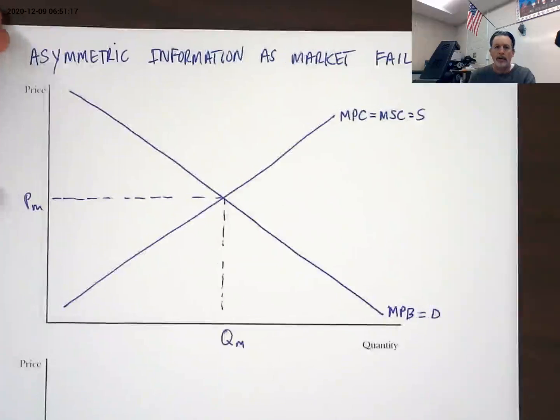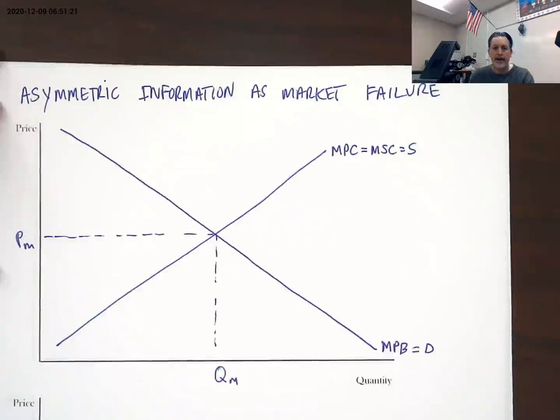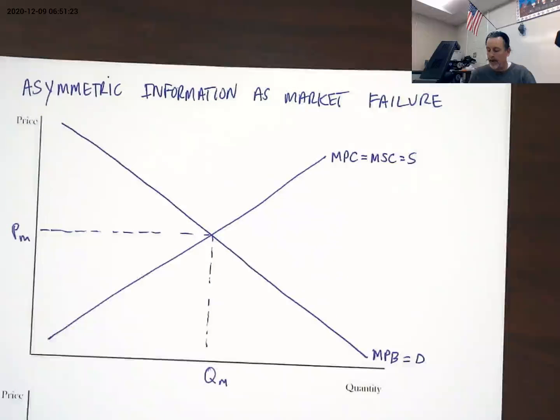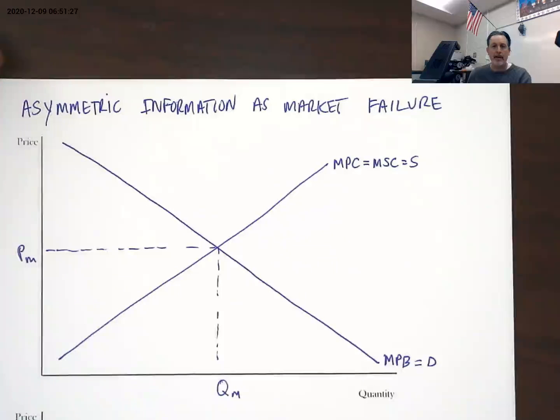Good morning. Today we're going to look at asymmetric information as a market failure in the way that varying levels of information between market participants can create outcomes that are less efficient for society than we would prefer.